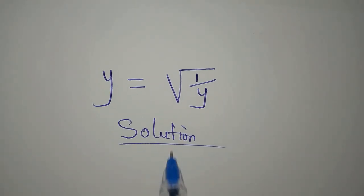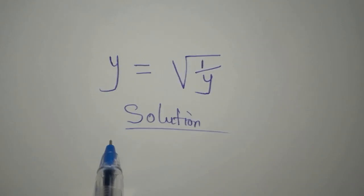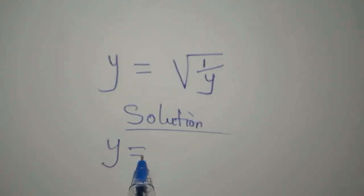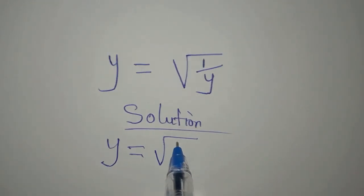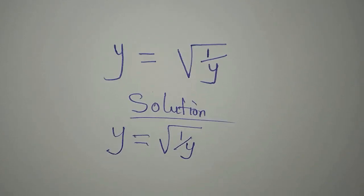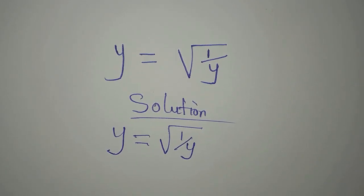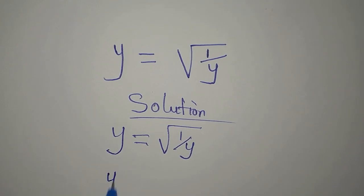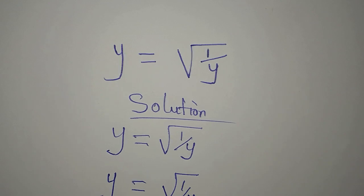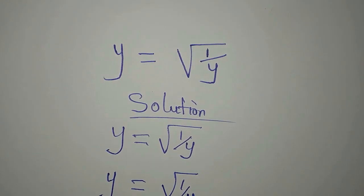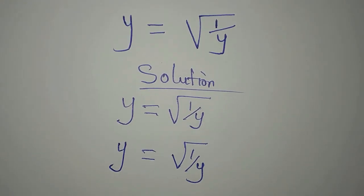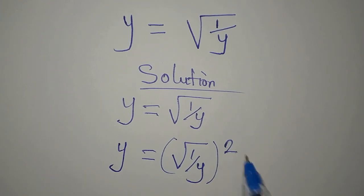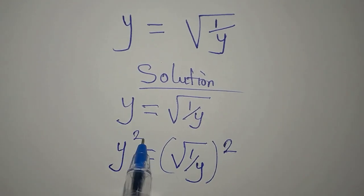Hi everyone, let's provide the solution to this problem: y equals the square root of 1 over y. The question says we should find the three solutions to this problem. To do that, we'll have to remove this square root, and we can do that by squaring both sides.